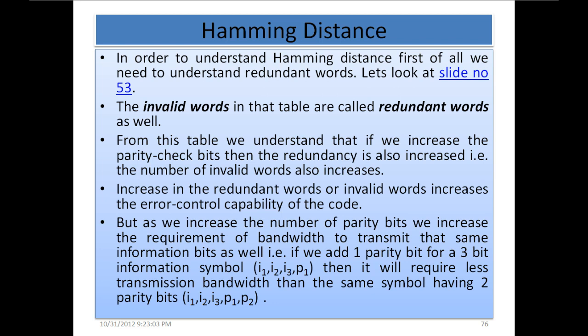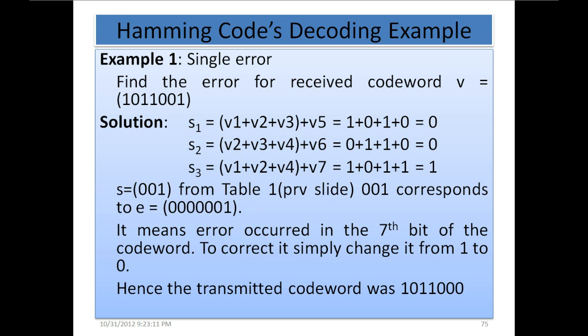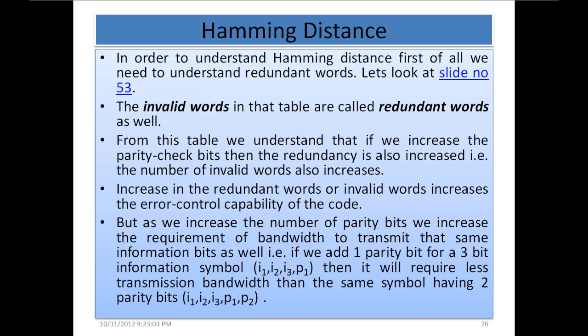In the last lecture we learned about Hamming code decoding — how it is done — and an example of Hamming code where we decoded a received message code word. Now we are going to understand the relationship between error detection and correction. In order to understand that, first we need to understand Hamming distance.